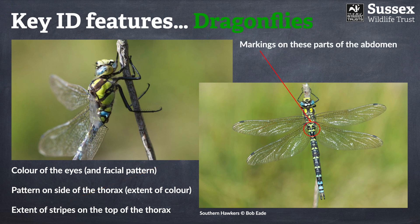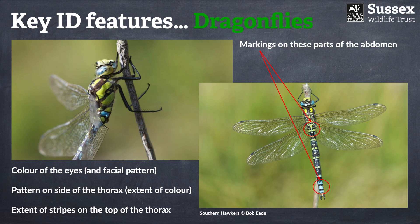Moving away from the thorax, we move on to the abdomen. Dragonflies and damselflies have 10 segments overall, and the segment in the red circle is the second segment. In this Southern Hawker, it has a little green triangle pointing all the way to the tail, but this will differ from species to species. Looking all the way along the abdomen, you'll see this dragonfly has paired dots, but those dots actually become banded at the end of the abdomen — again a really important trait of Southern Hawker that will help you differentiate one species from another.